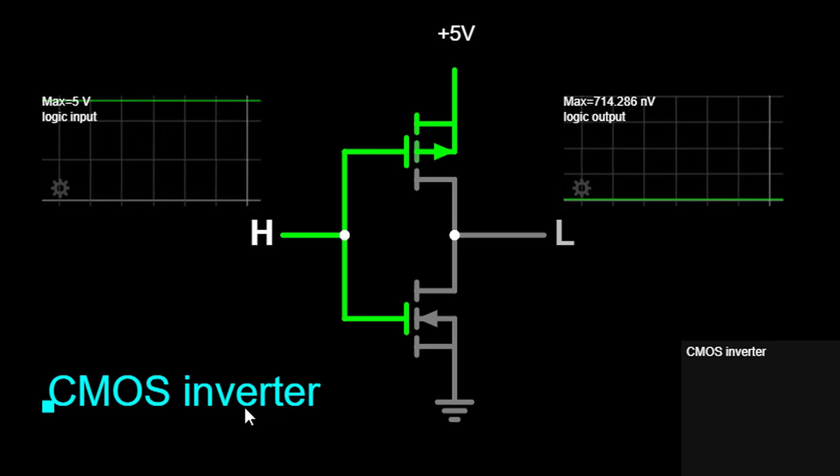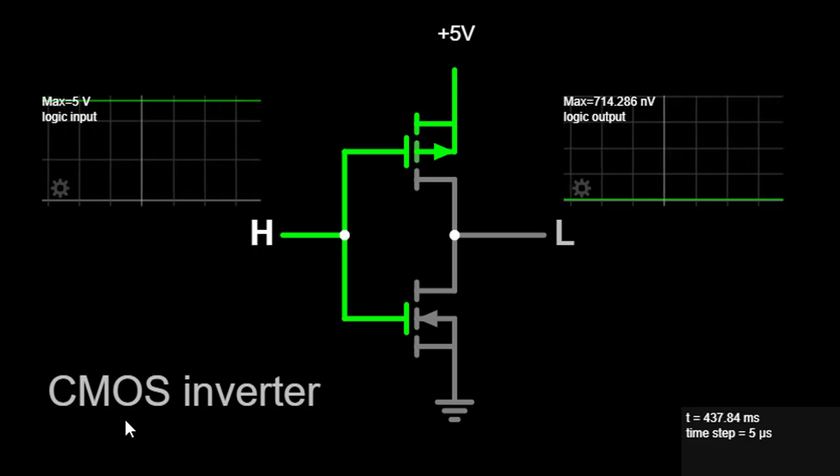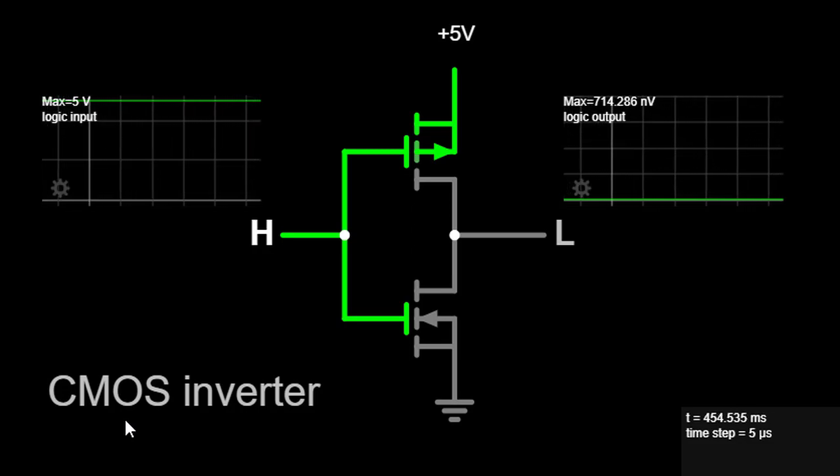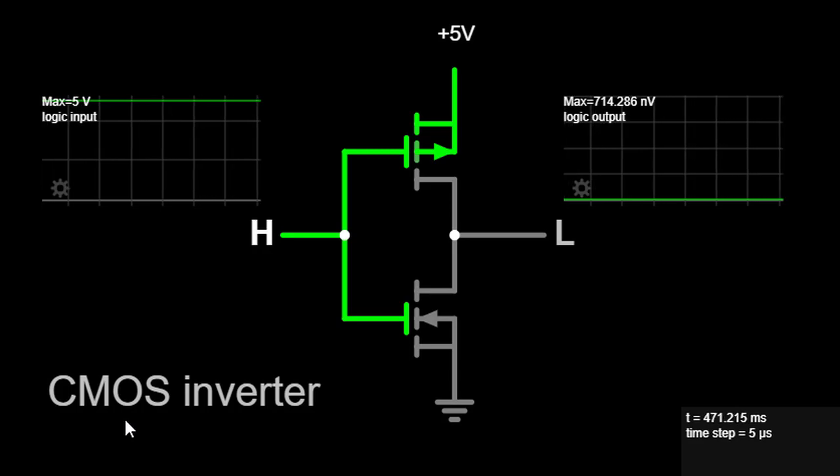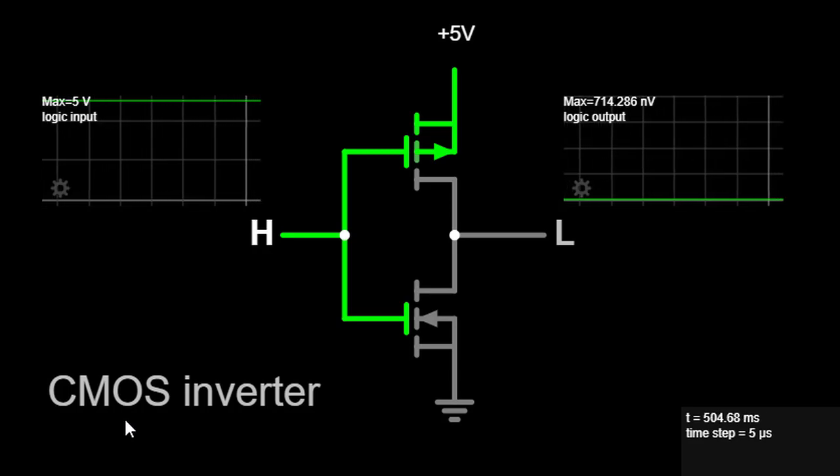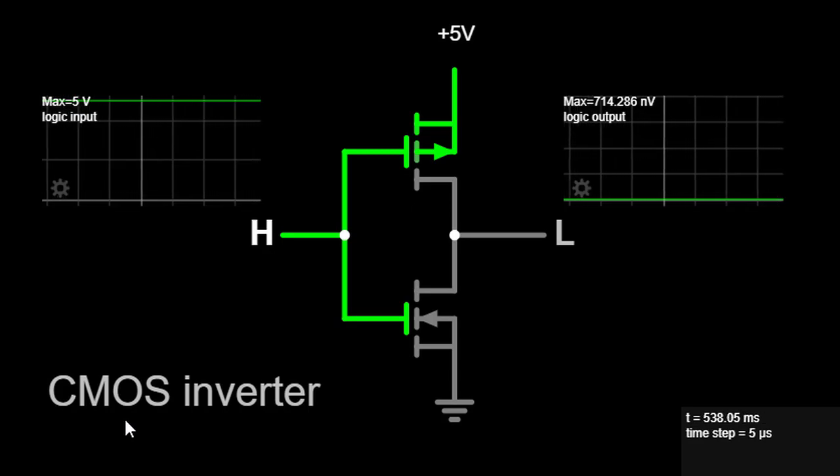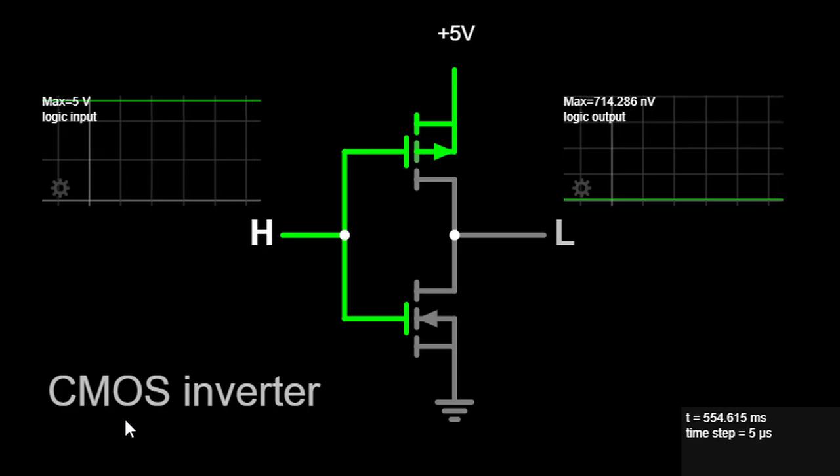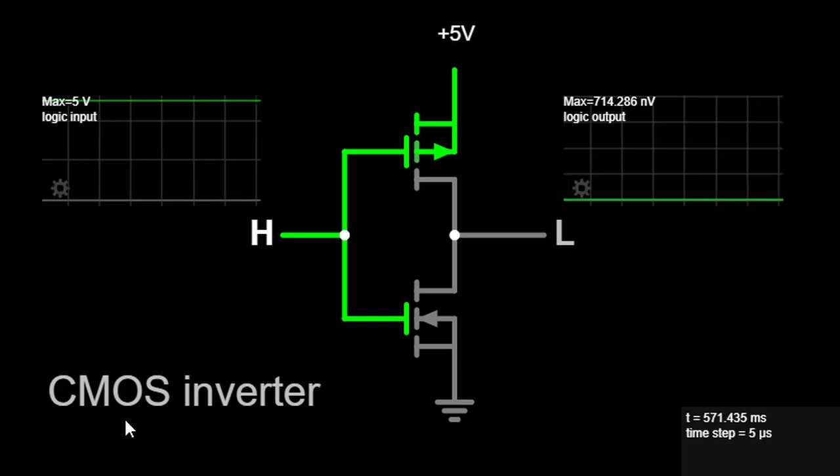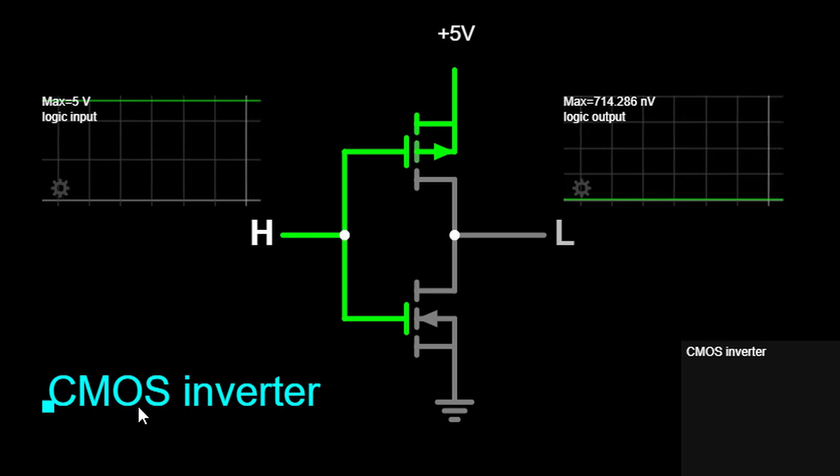CMOS, an acronym for Complementary Metal-Oxide Semiconductor, is a widely employed technology in the realm of modern electronic devices and integrated circuits. The CMOS inverter, a fundamental building block of digital circuits, plays a pivotal role in signal processing and logic operations. Join us on this exploration as we uncover the intricate workings of CMOS inverters and their significance in the world of electronics.